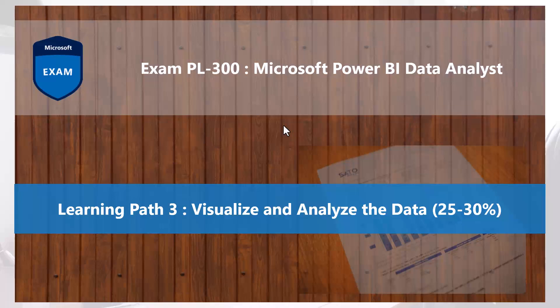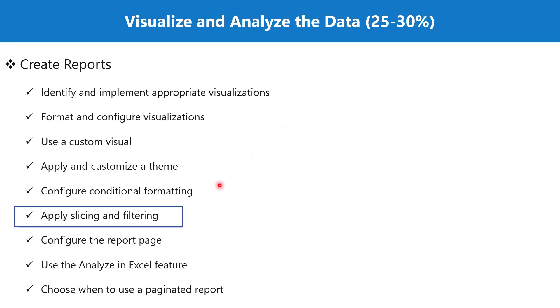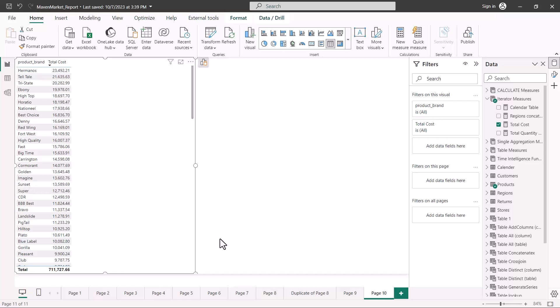Hello everyone, welcome back to the PL 300 exam preparation series where we are exploring the third learning path: visualize and analyze the data. In this video we are going to discuss the topic 'apply slicing and filtering', which is part of the section 'create reports'. We have already talked about the filter pane in some of the previous videos, but let's explore it in a bit more detail, and then we are going to talk about the process of slicing through the slicer visual. Let's go to the Power BI Desktop environment.